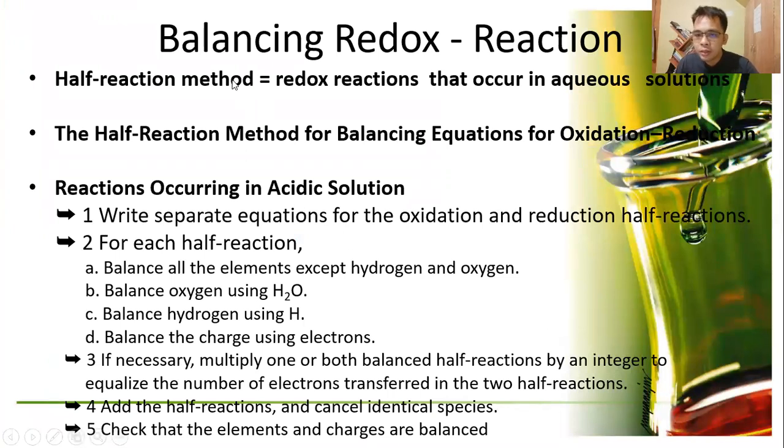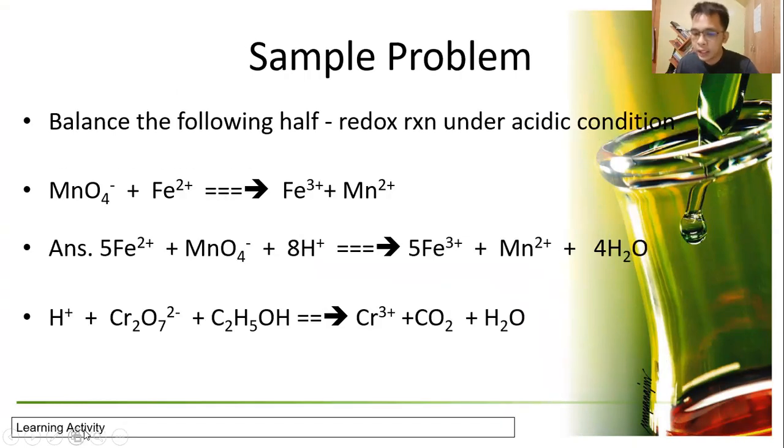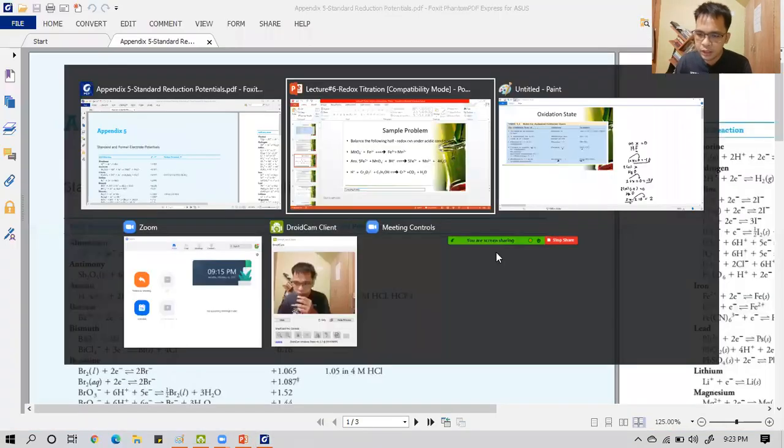Let's continue our discussion. We will now discuss the balancing of redox reactions. The redox reaction is composed of reduction reaction and oxidation reaction. These are the step-by-step methods to balance the reactions in acidic solution. Let's go directly here. Balance the half reaction under acidic condition. This is what you'll balance. This is the answer. How did that happen? This is what you're balancing but hydrogen appeared, and H2O.